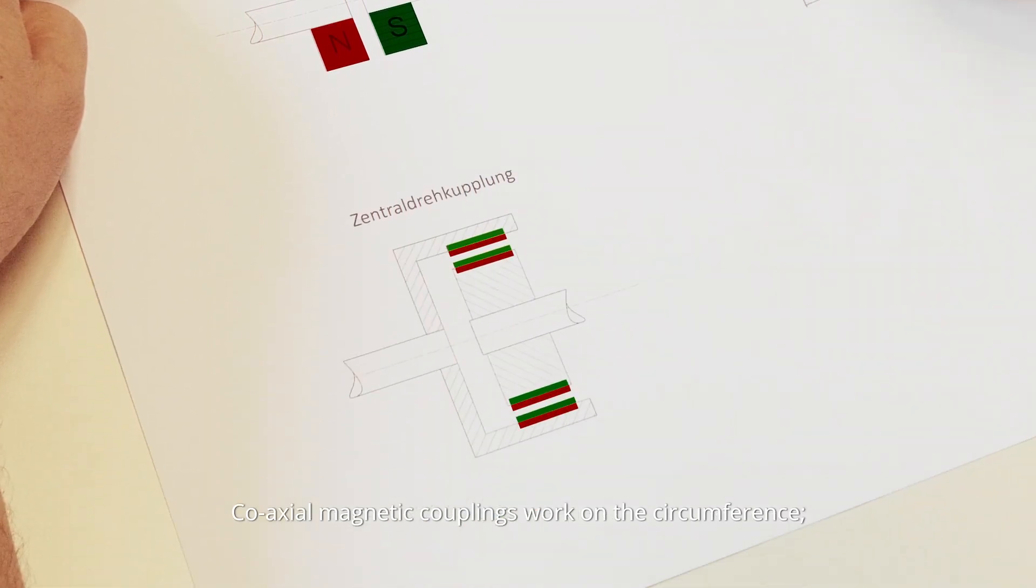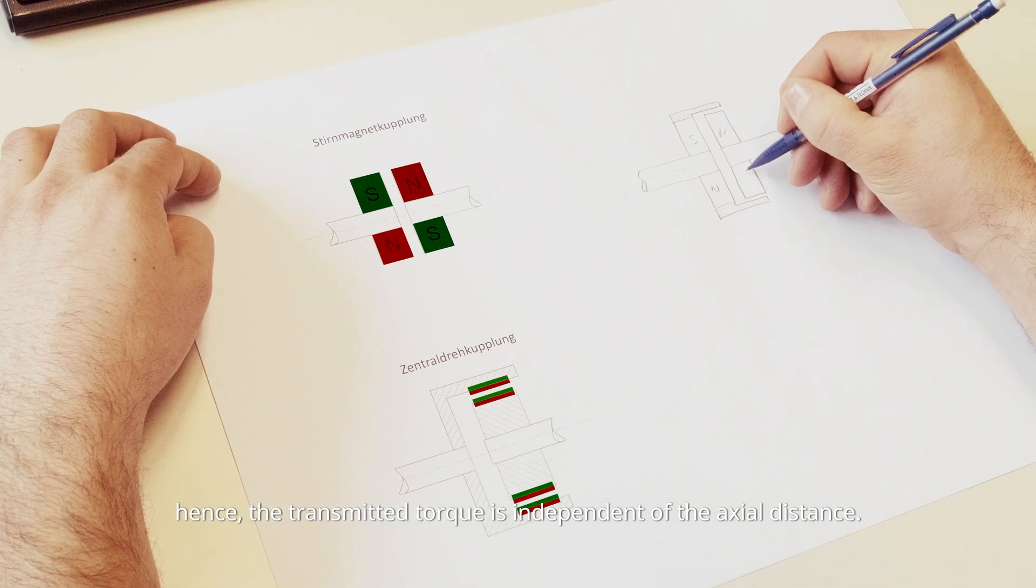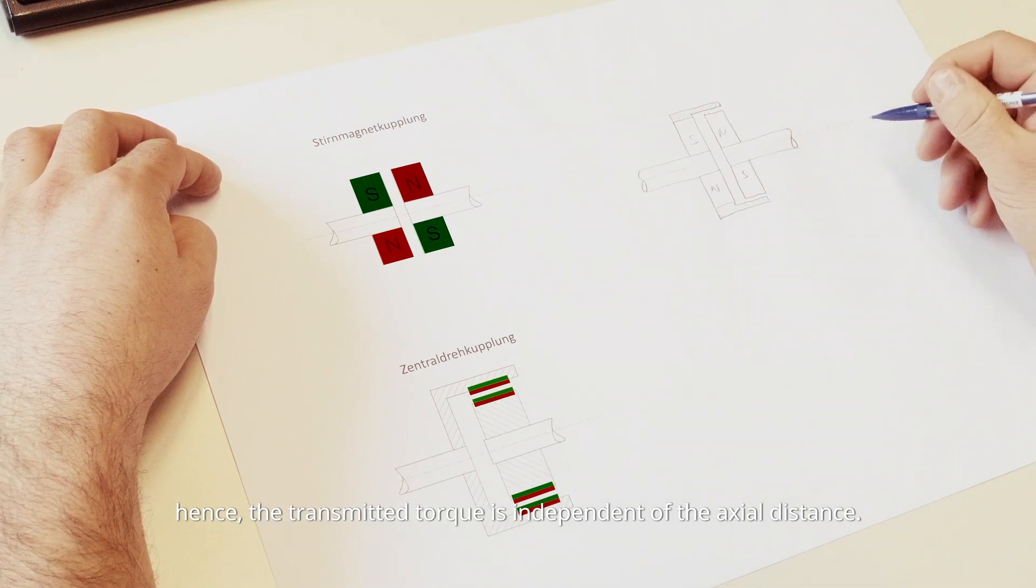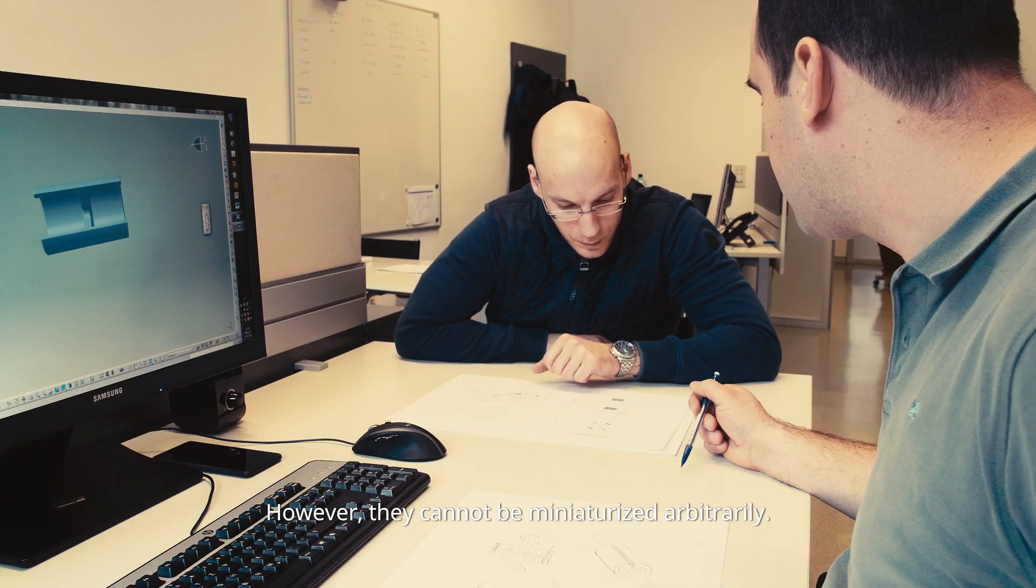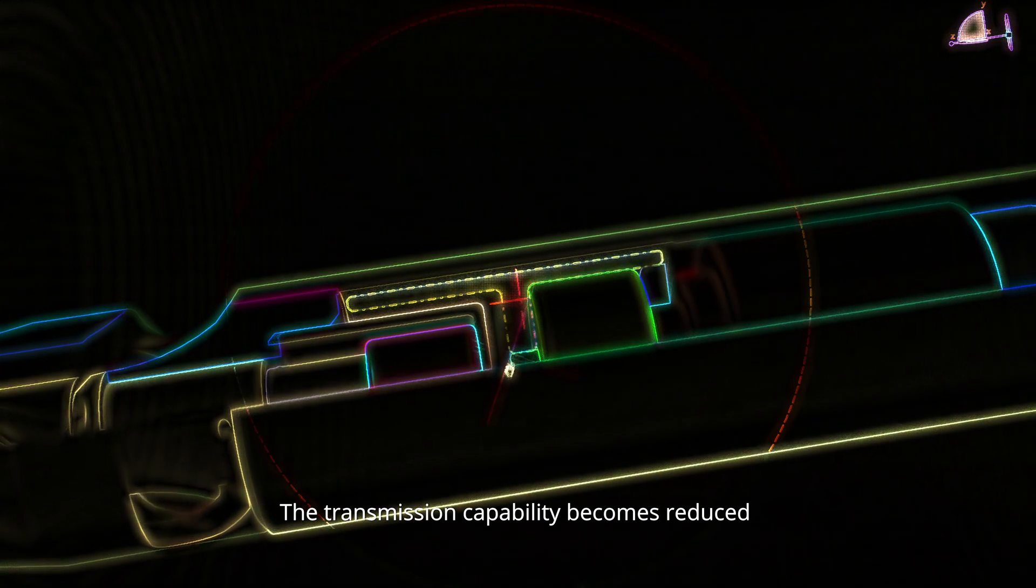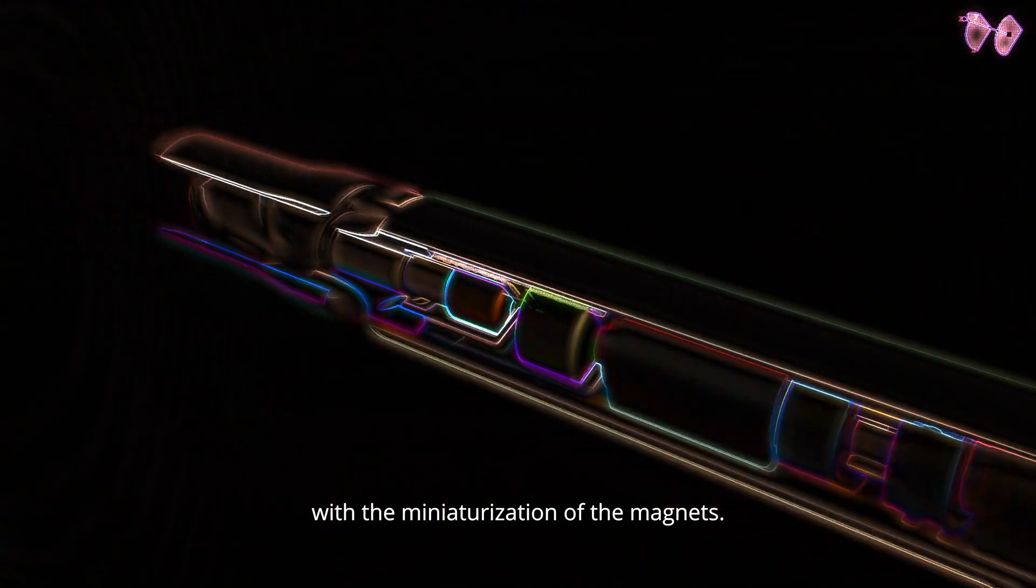Coaxial magnetic couplings work on a circumference, hence the transmitted torque is independent of the axial distance. However, they cannot be miniaturized arbitrarily. The transmission capability becomes reduced with the miniaturization of the magnets.